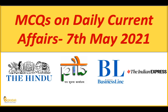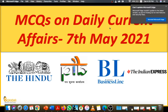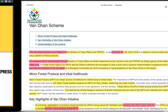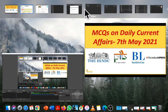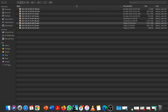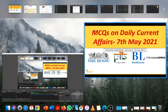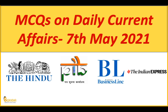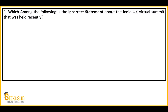We will discuss the current affairs. You can download the PDF from the description. First question: Which among the following is the incorrect statement about the India-UK Virtual Summit that was held recently? India's Prime Minister and UK's Prime Minister both participated.